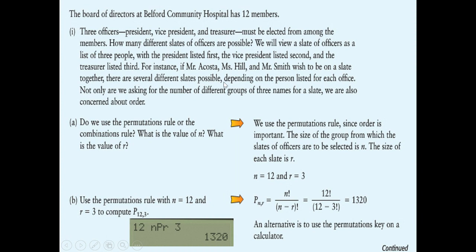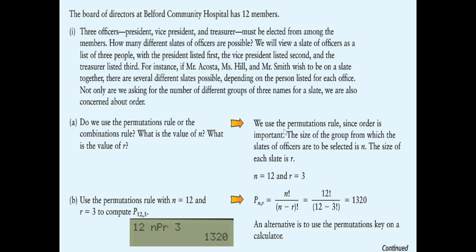A classic problem: three offices — president, vice president, and treasurer — must be elected from members. We view a slate as a list of three people where president is first, VP is second, and treasurer is third. If Mr. Costa, Ms. Hill, and Mr. Smith are on a slate, there are several different slates possible depending on who holds which office. If Ms. Hill is listed first instead of Mr. Costa, now she's running for president instead. It's a different arrangement, so this is a permutation problem — order makes a difference. The order in which they're listed on the ballot makes a big difference.